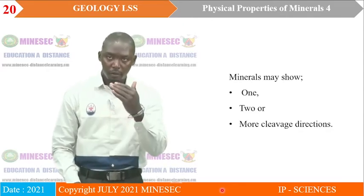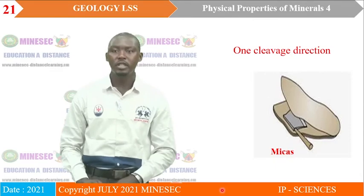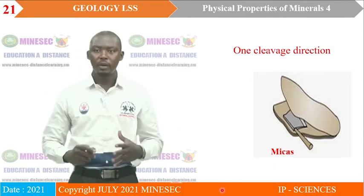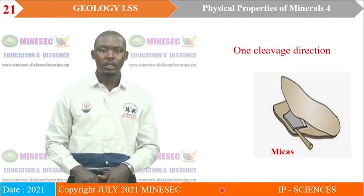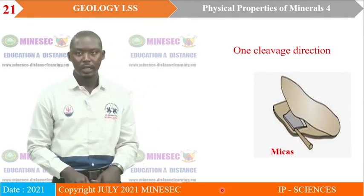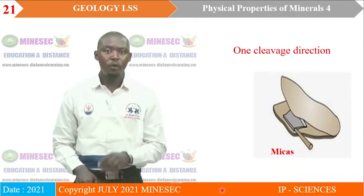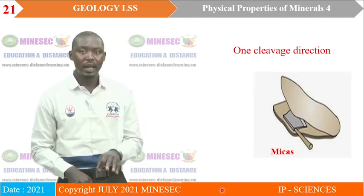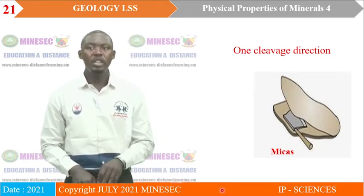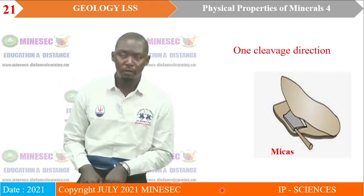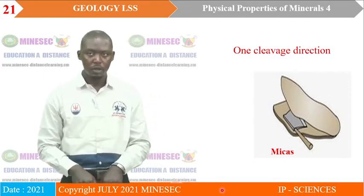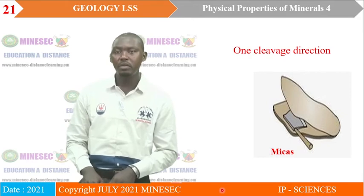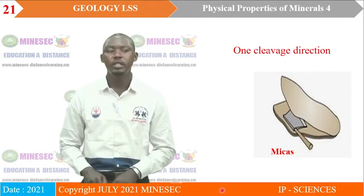We take first an example of a mineral with one cleavage direction. On our image, we have mica — it can be muscovite or biotite. They have one perfect cleavage direction, described as basal cleavage. The axis on the image shows you the plane of weakness along which the minerals were split. So an example of a mineral with one direction of cleavage is mica.